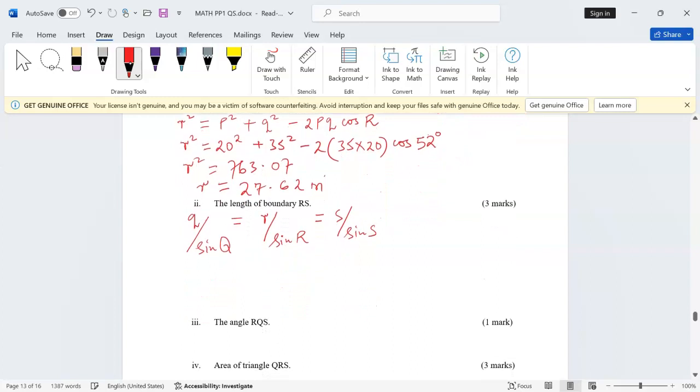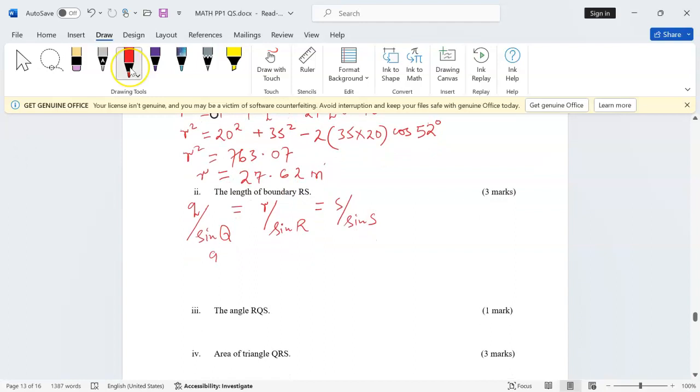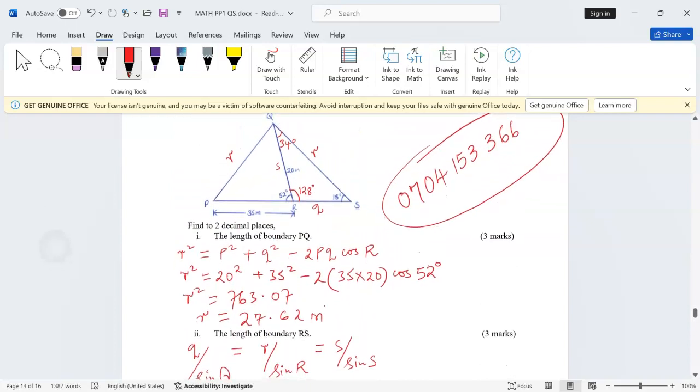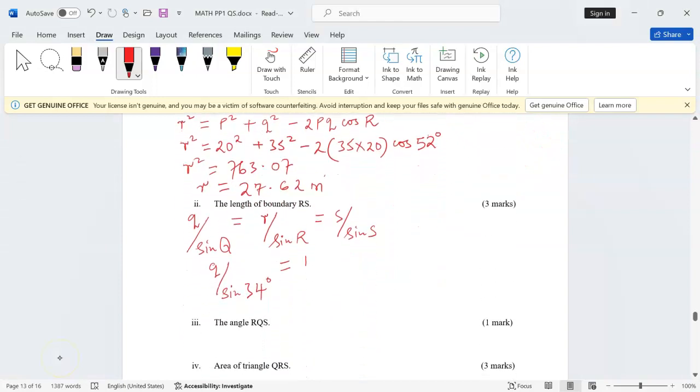For this case, the only part which can help us is s and q, such that we'll say length q divided by the sine of the angle at Q, which is 34 degrees, is equal to length s. Length s is 20 out of sine of the angle at S which is 18.